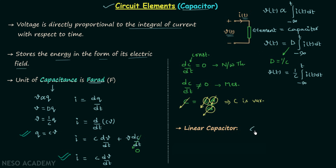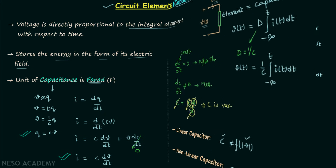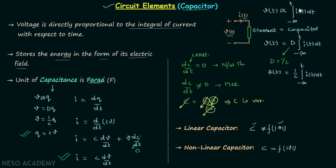In the case of a linear capacitor, the capacitance is not a function of the magnitude of the voltage — capacitance is independent of the voltage magnitude. A non-linear capacitor is one whose capacitance is dependent on the voltage magnitude. Whenever the linear condition is satisfied, we represent the element with the standard symbol of a capacitor, instead of using a black box.